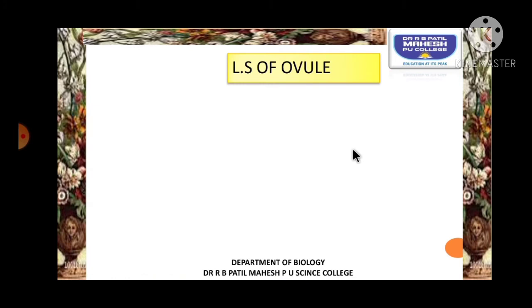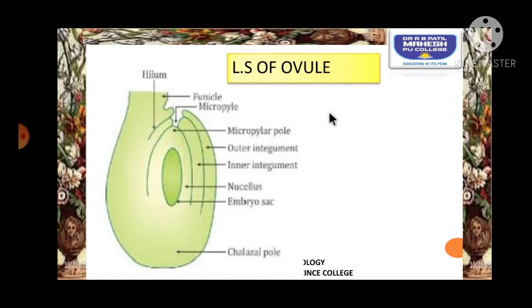As we all know, ovule is a small structure which will be present attached to the placenta by means of a stalk called funicle. If we take a vertical section of the ovule, we can see the structure similar to the diagram given in the slide. The ovule is attached to the placenta by means of the stalk called funicle, and the point of attachment of the funicle to the body of the ovule is called hilum.